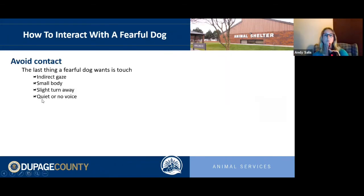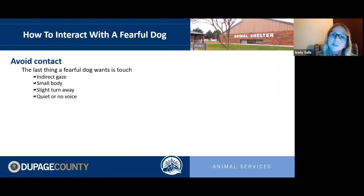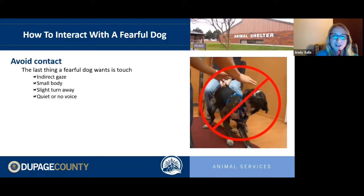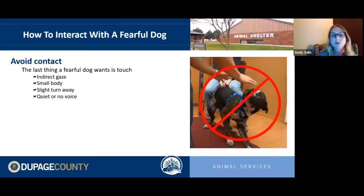When working with a fearful dog, avoid contact — the last thing a fearful dog wants is touch, even though our instinct is to hug and comfort. Be conscious of your own body language: use an indirect gaze rather than direct eye contact, make your body small by crouching or sitting, curl into yourself a little, and do a slight turn away to expose your side to the dog.